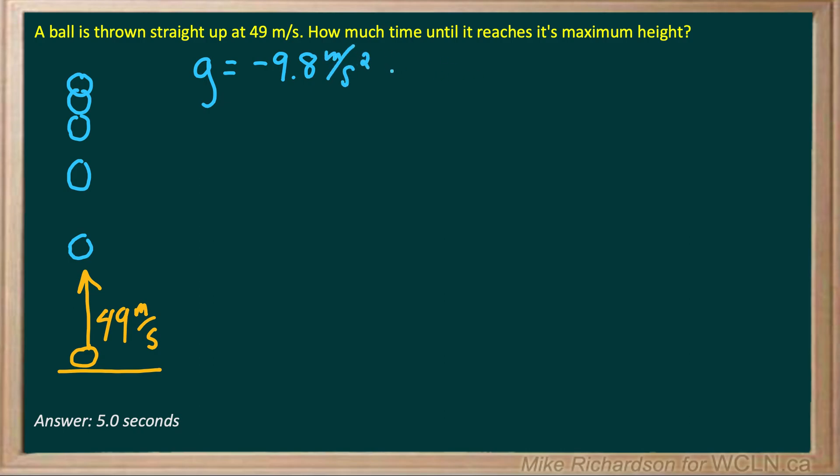If we want to get a rough estimate as to how long it takes to get to the apex, instead of using this awkward 9.8 number, let's make it roughly negative 10 meters per second squared. That means your velocity is changing by 10 meters per second each second. You're losing 10 meters per second each second.